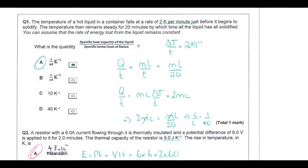The first few questions are multiple choice but there are some fairly tricky ones. The temperature of a hot liquid in a container falls at two kelvin per minute just before it begins to solidify — that's a temperature change. The temperature then remains steady for 20 minutes, meaning a phase change is happening. After 20 minutes it has completely solidified. We can assume the rate of energy lost remains constant, so I've created expressions for the rate of energy loss during each scenario.